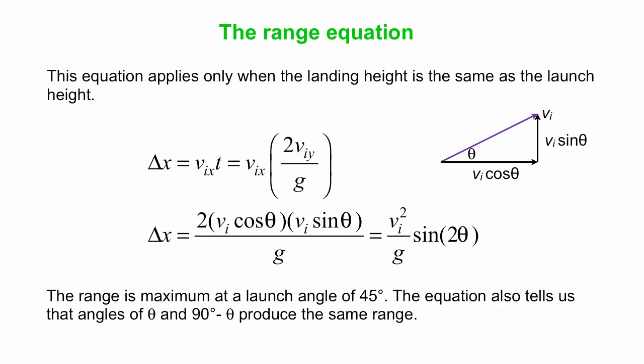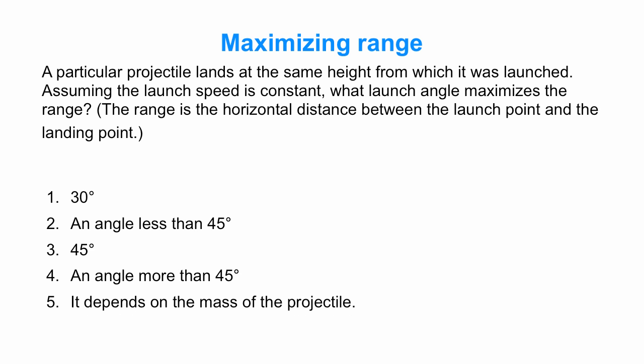In our question here, which angle do you launch at to get the maximum range? That is, in fact, 45 degrees. And that's, again, only when you land at the same height that you launch from. So that's a good introduction to various projectile motion equations.